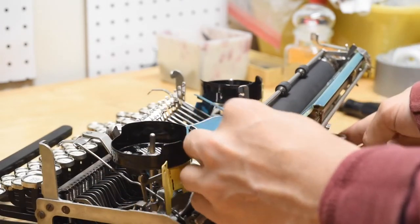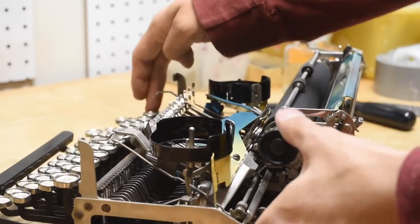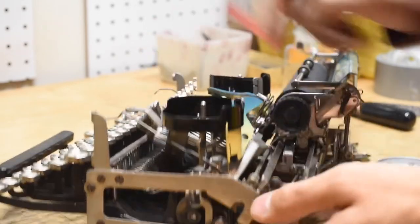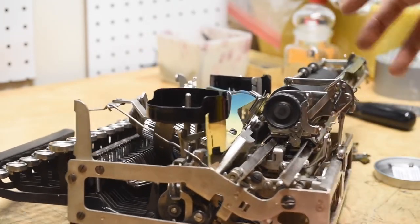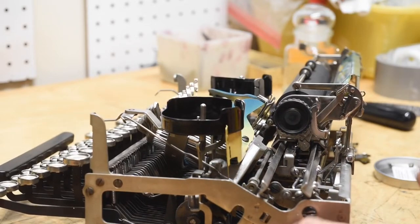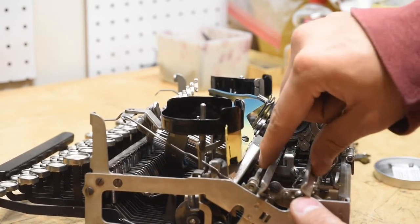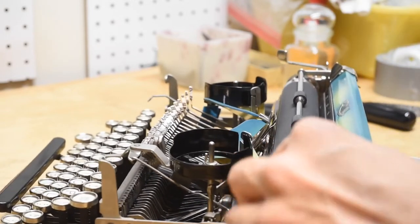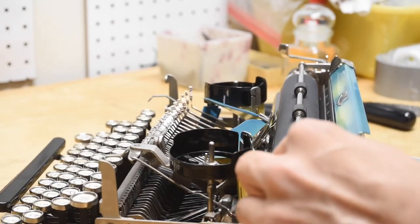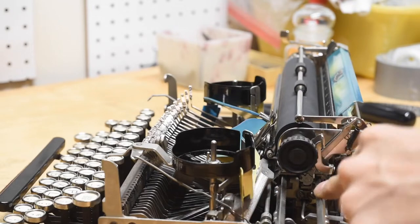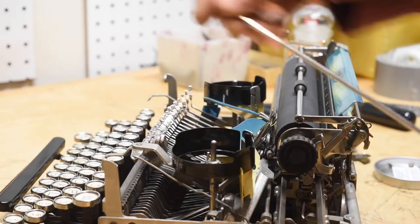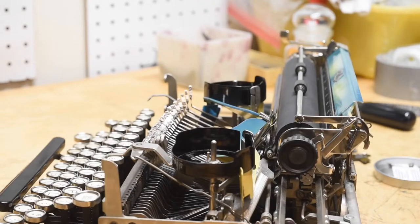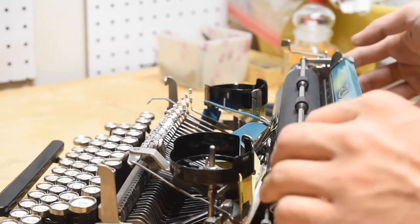Once you've installed your carriage, we're also going to want to take a look at these adjustment screws. Not every typewriter has these, but especially on the Royal P, you're going to want to adjust the width of these carriage rails so that the carriage does not wiggle around at all, but still rides very smoothly. I'm going to make that adjustment really quick. All right, that feels a lot better.